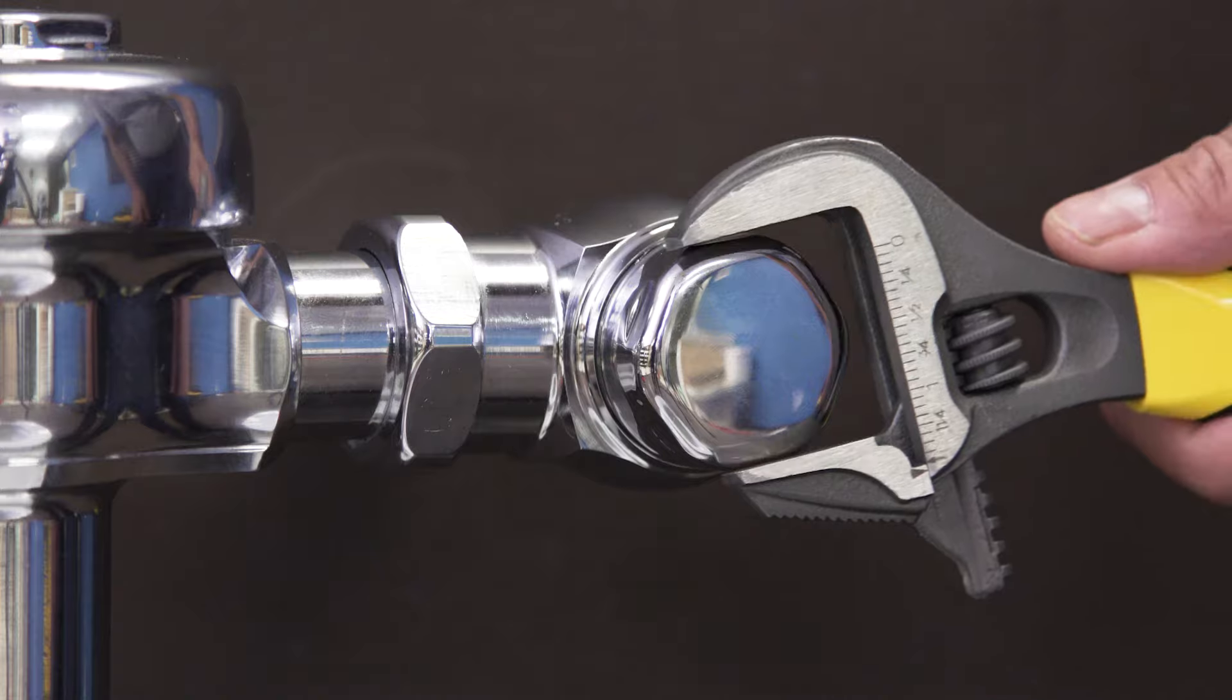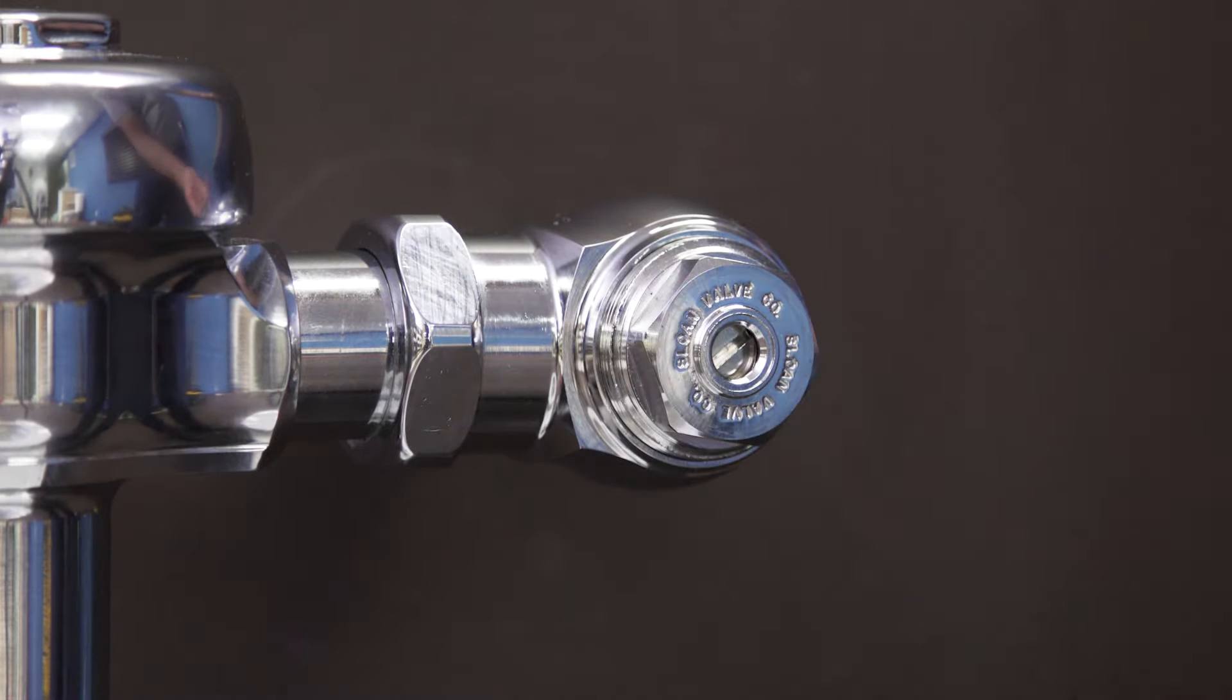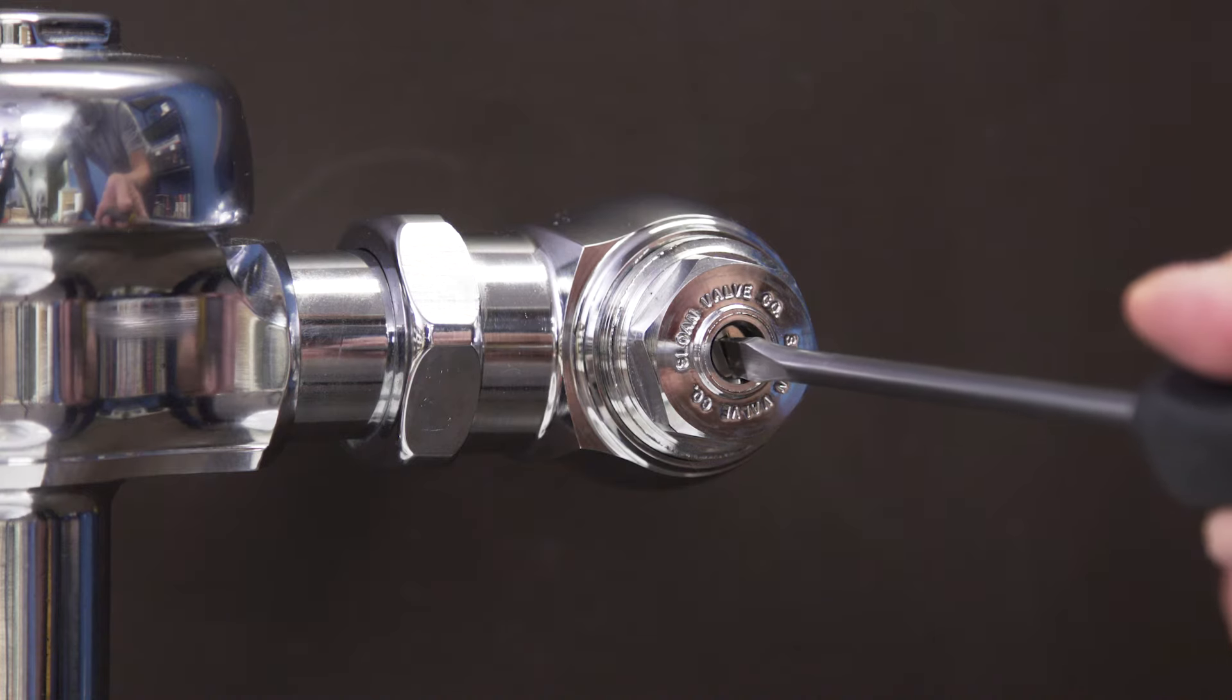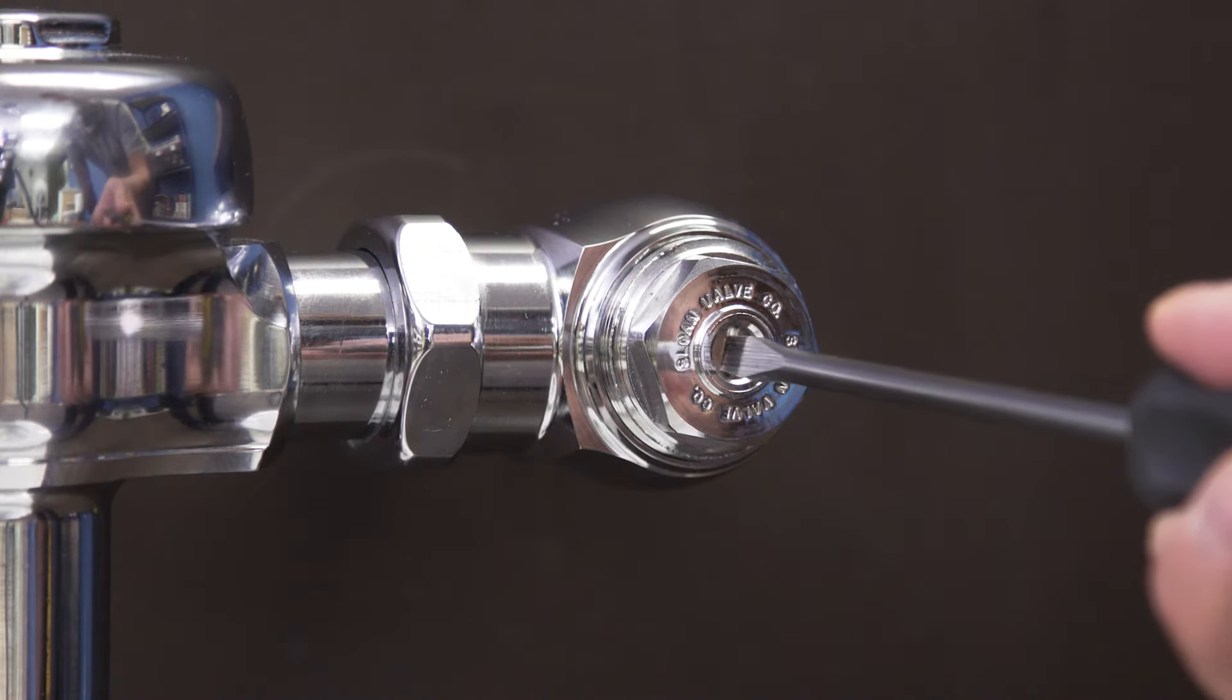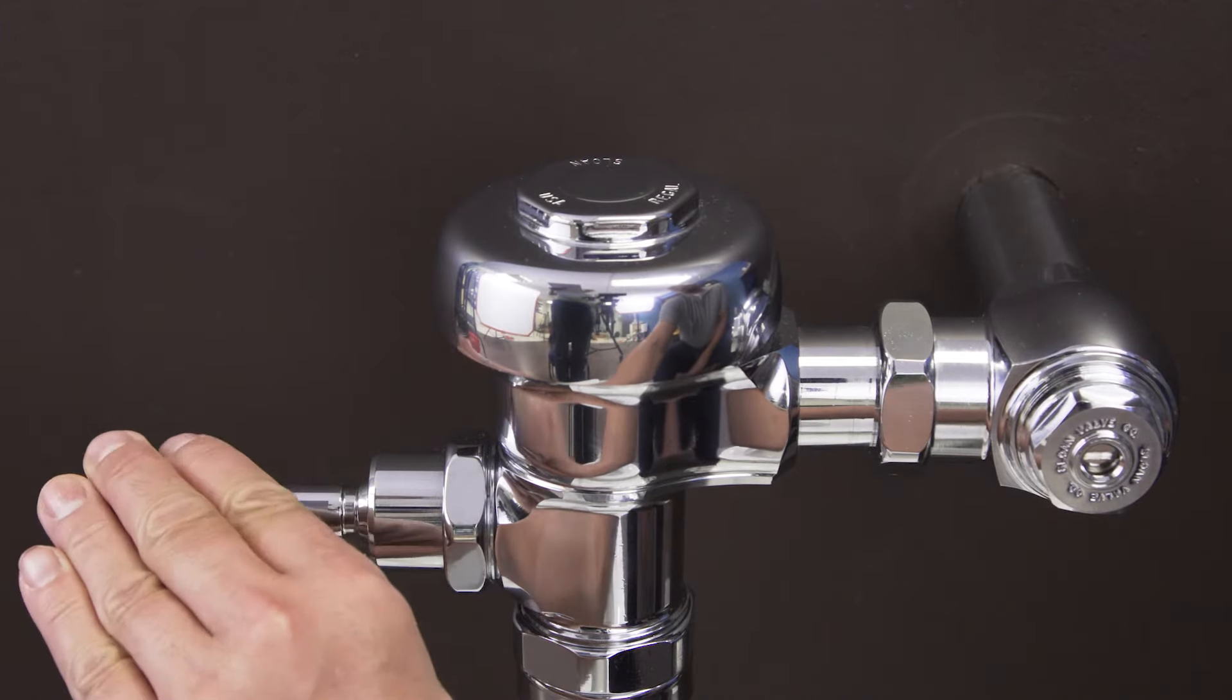First, shut off the water to the flushometer. Remove the cap and use a flat blade screwdriver to turn the screw clockwise until the control stop closes. Next, hold down the handle to remove any remaining water.